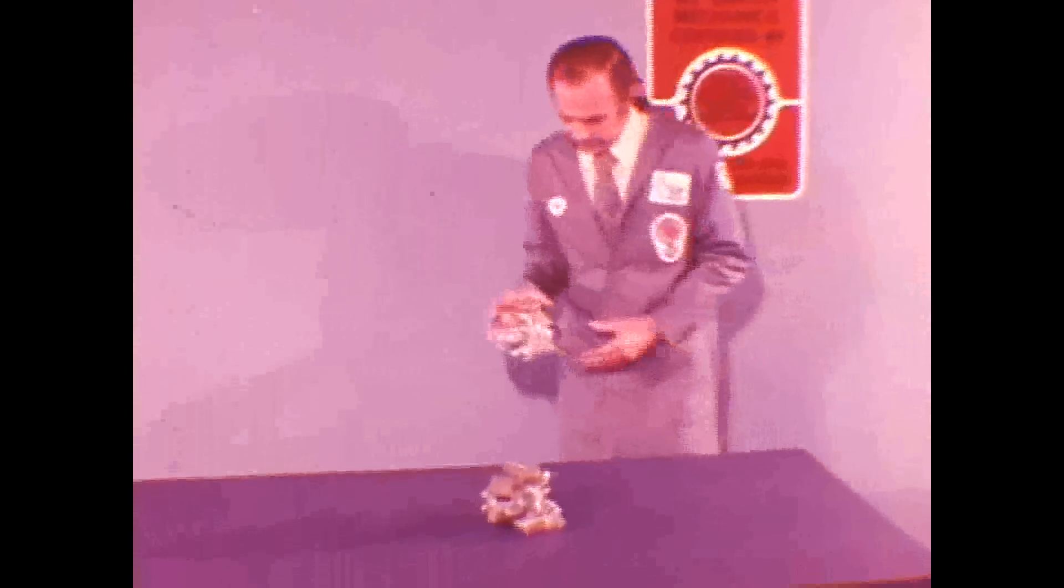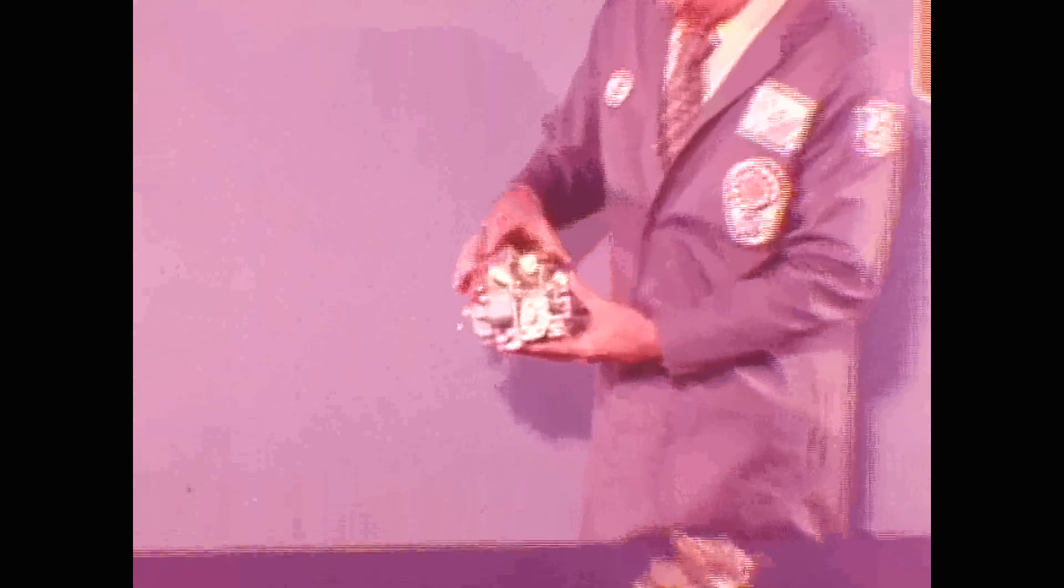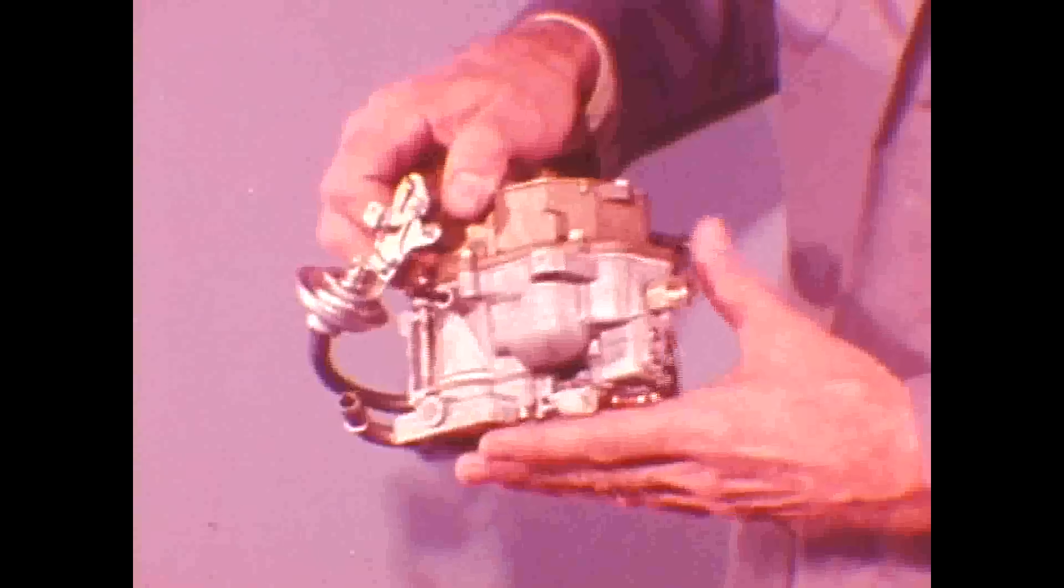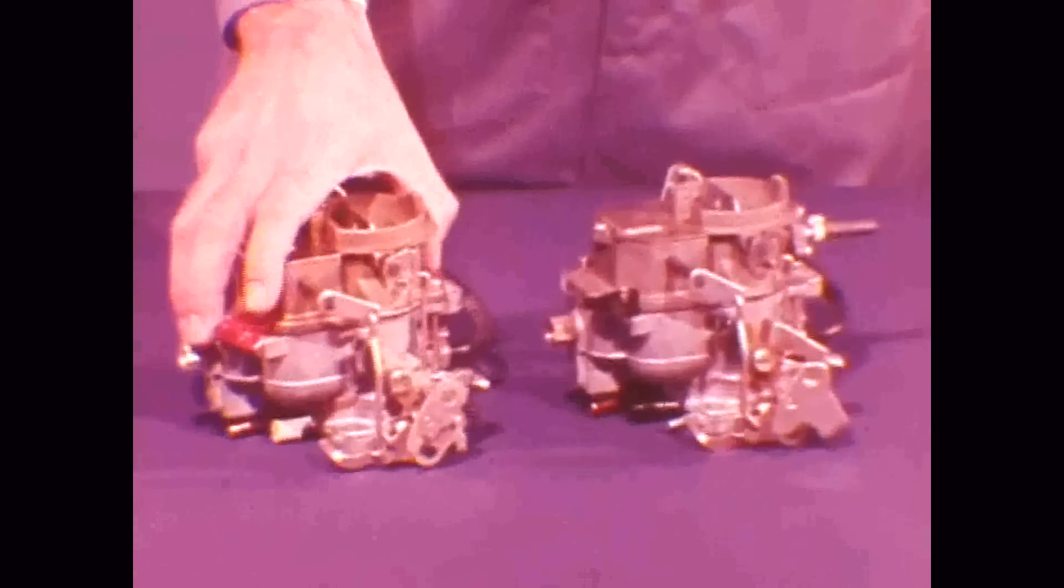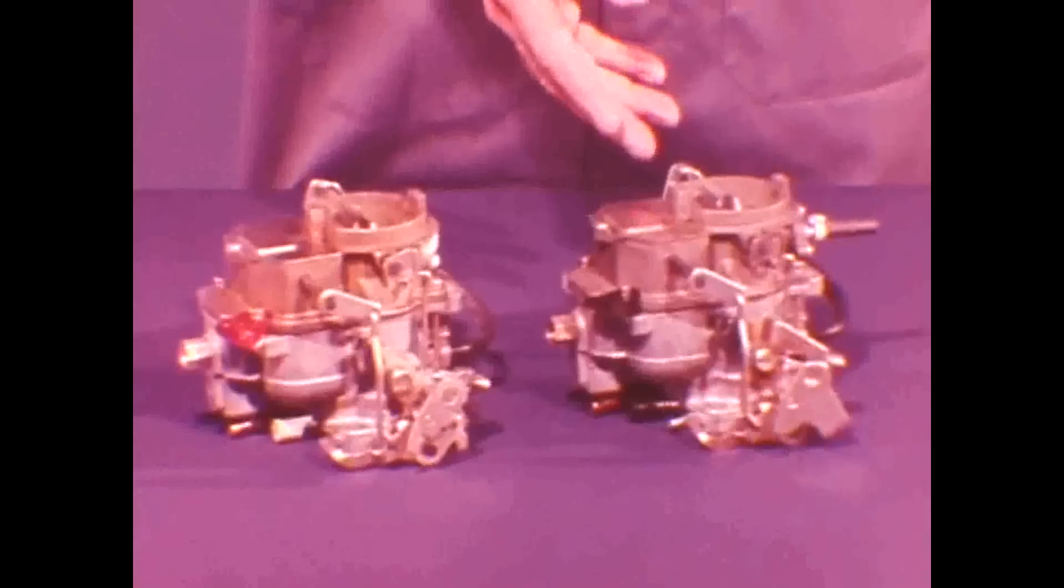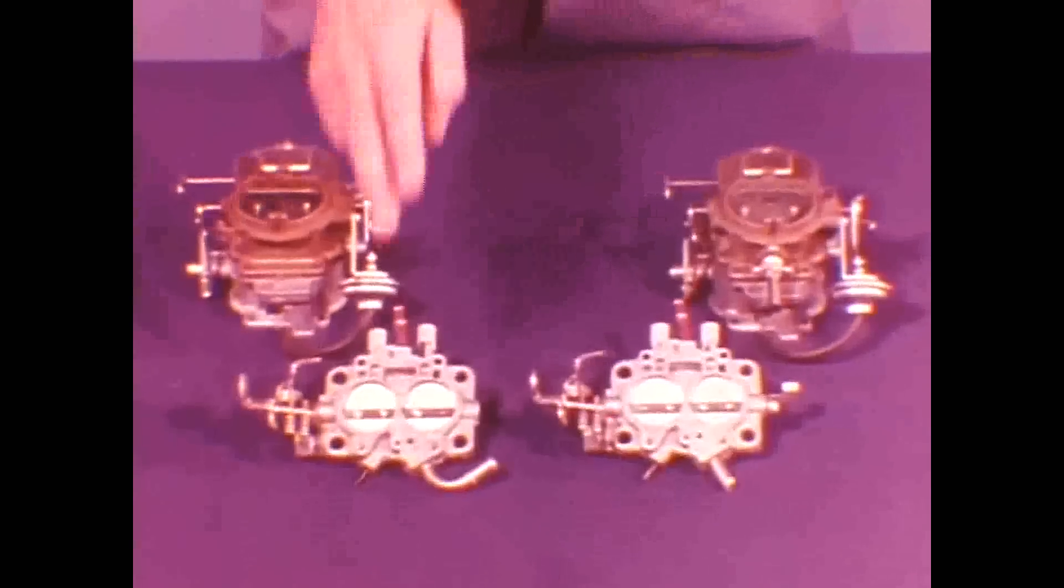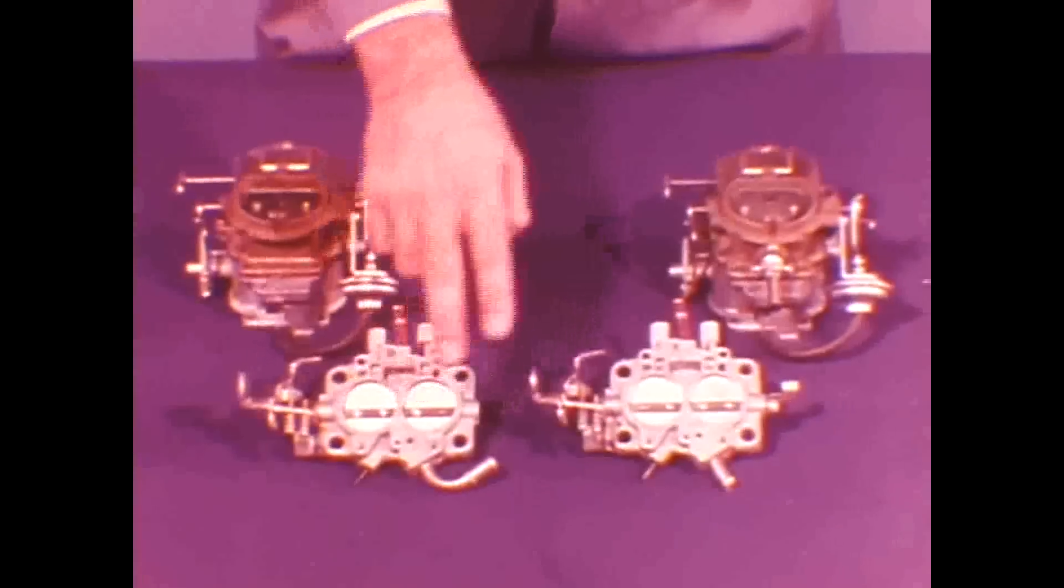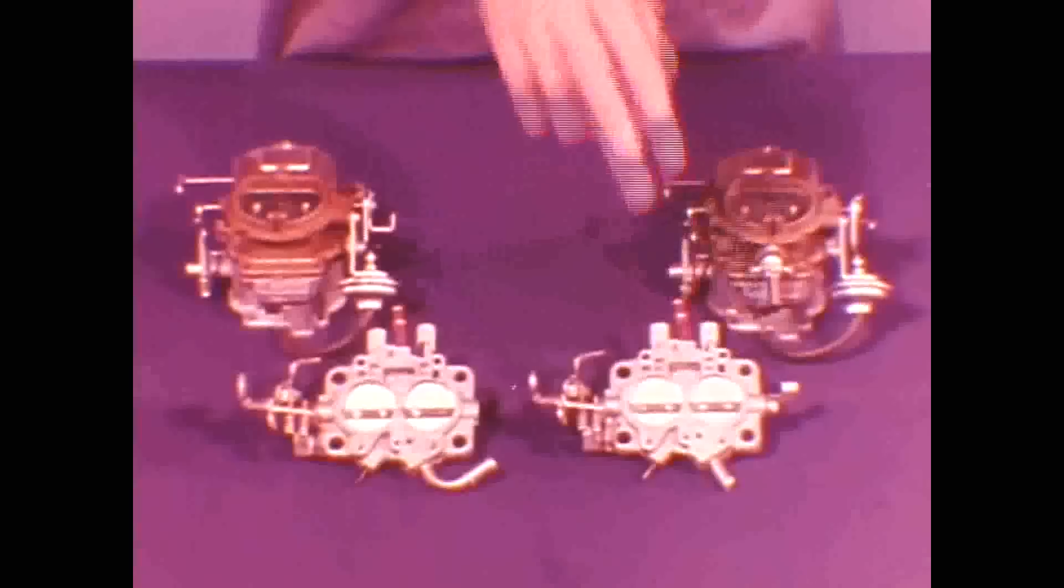One good carburetor certainly deserves another and here it is, the Carter two-barrel mixer for the 1977 Super 6 225 engine. As you can see, it looks almost identical to the reliable Carter we've had for the past several years on our 318 engines.